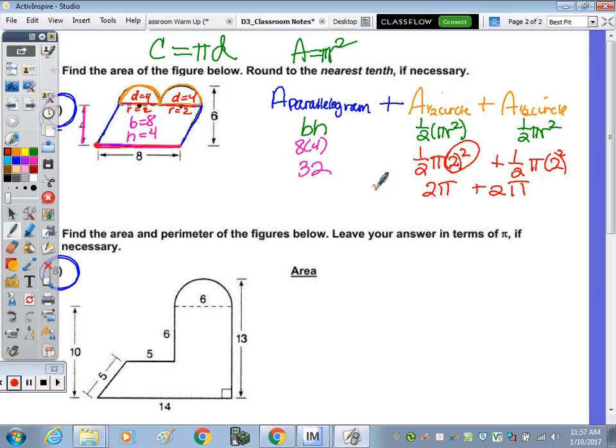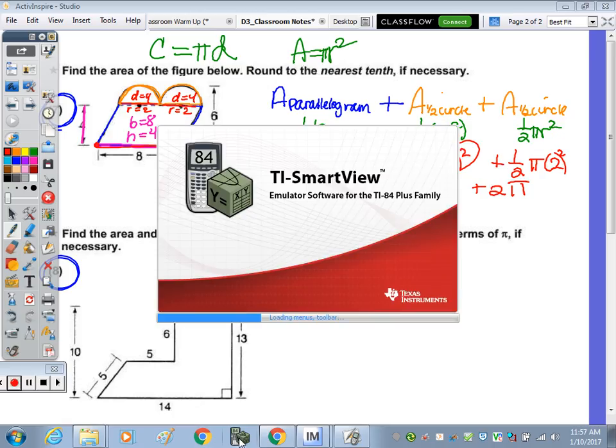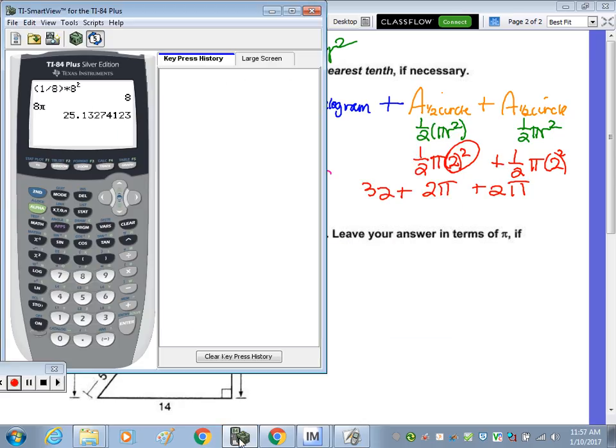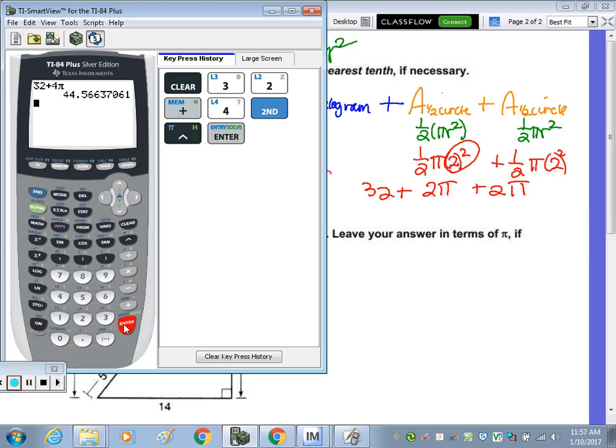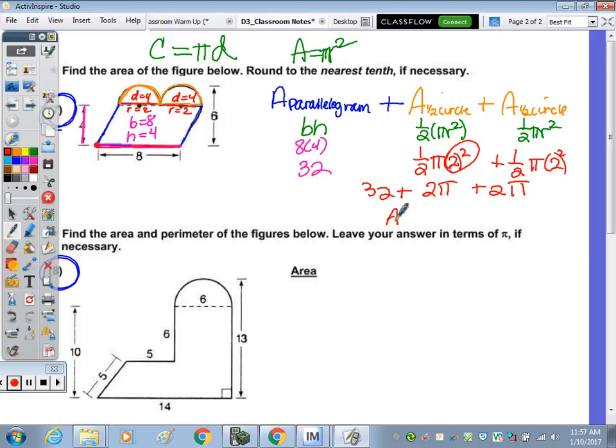Let's go to your graphing calculator. Type in 32 plus 2 pi plus 2 pi. Or how many pi's do you have all together when you add the 2 pi and 2 pi? 4. So you can do 32 plus 4 pi. We're going to round to the nearest tenth and that would be 44.6. So the area, when it says to round, the approximation symbol is like this, 44.6 units squared.